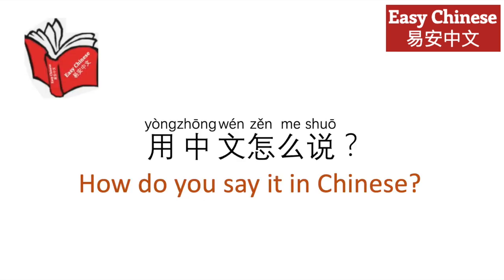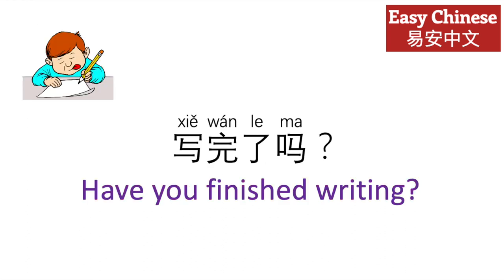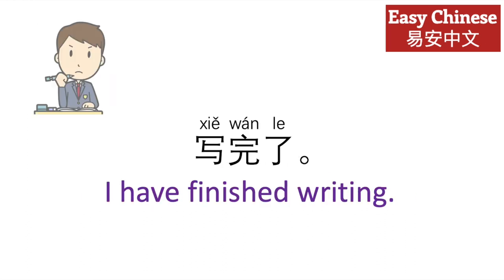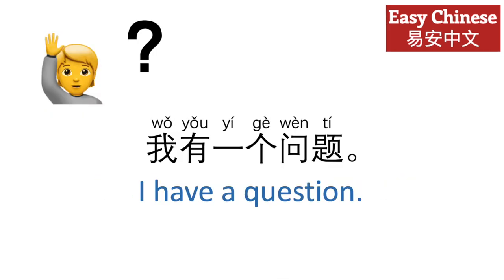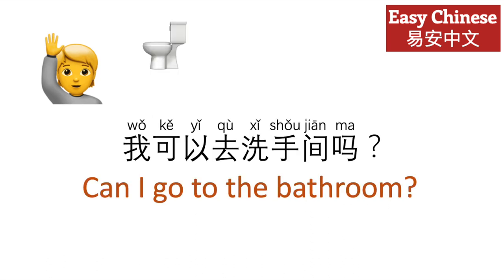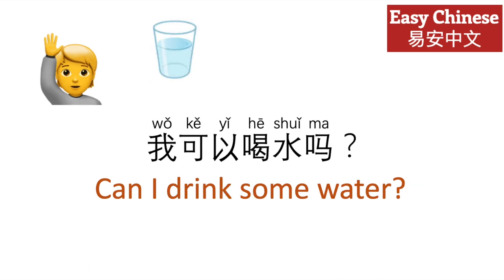用中文怎么说？ — How do you say it in Chinese? 写完了吗？ — Have you finished writing? 写完了 — I have finished writing.